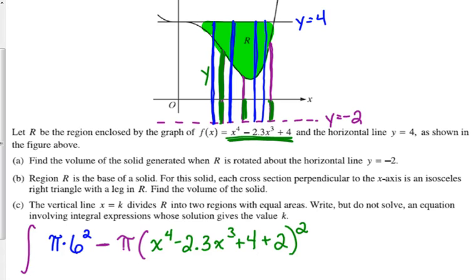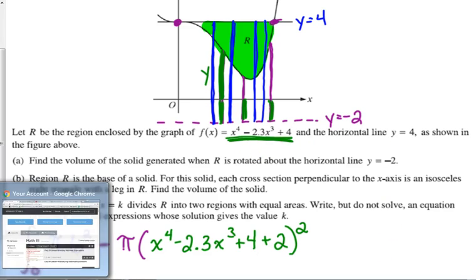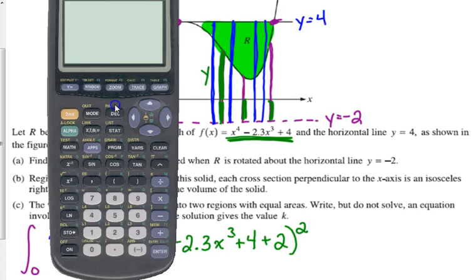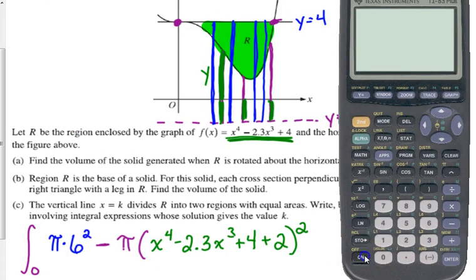So, where does this start? It starts at x equals 0. Where does it end? We don't know. We've got to figure that out. We've got to figure out where this curve intersects with 4. So, this is calculator active. That means you should use your calculator to graph it.